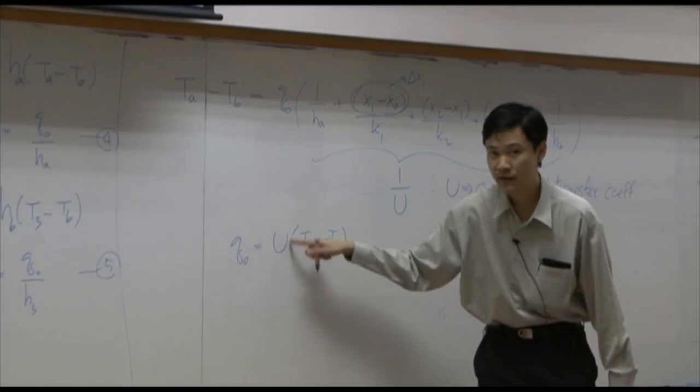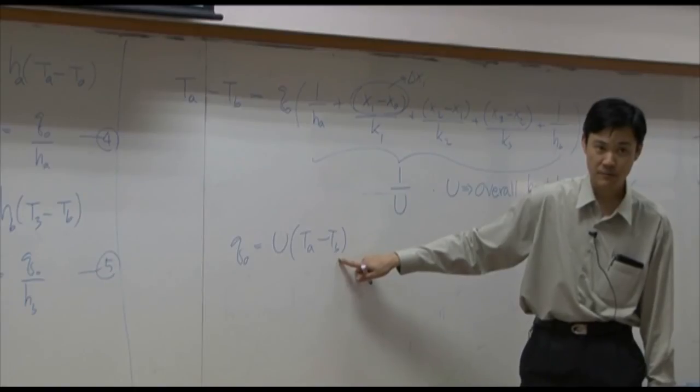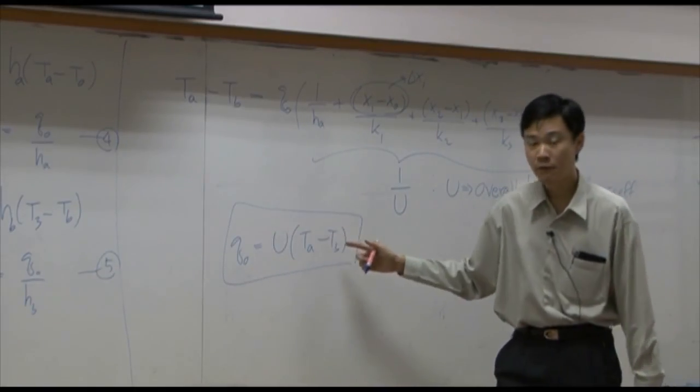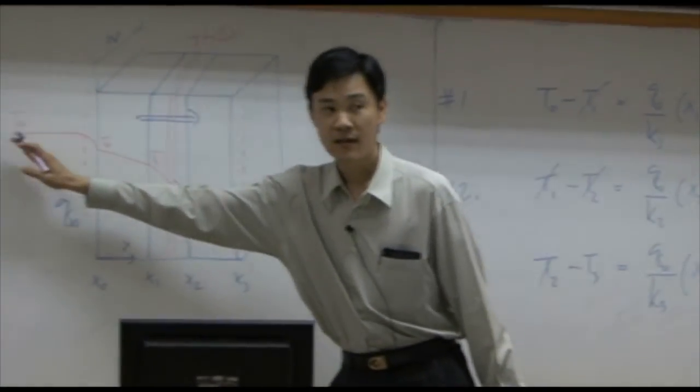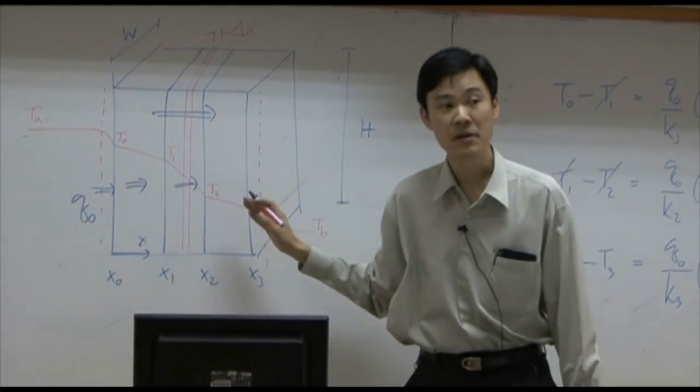Q equal to one coefficient multiplied by driving force of temperature. But in this equation here, the driving force starts from the very left hand side and very right hand side. You don't need to know temperature in between.